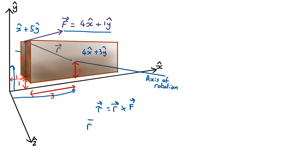Now r is going to be from here to here, so that's going to be the final end of the vector here minus the start. So that's going to be x plus 5y minus 4x plus 3y.